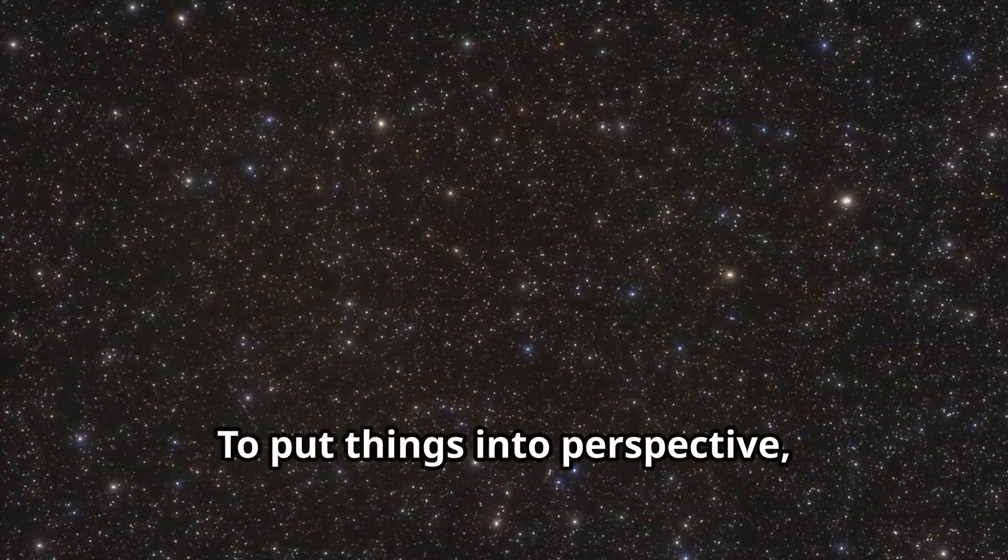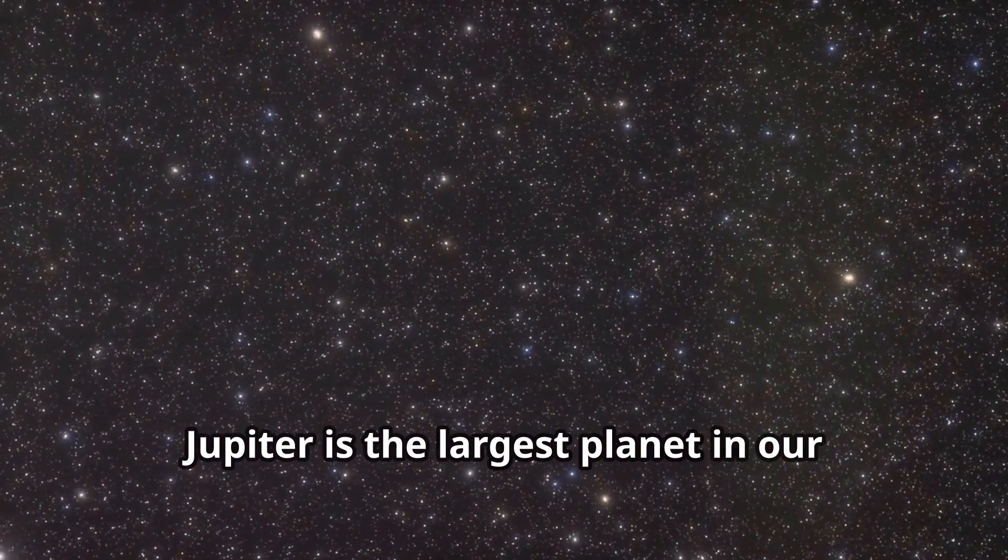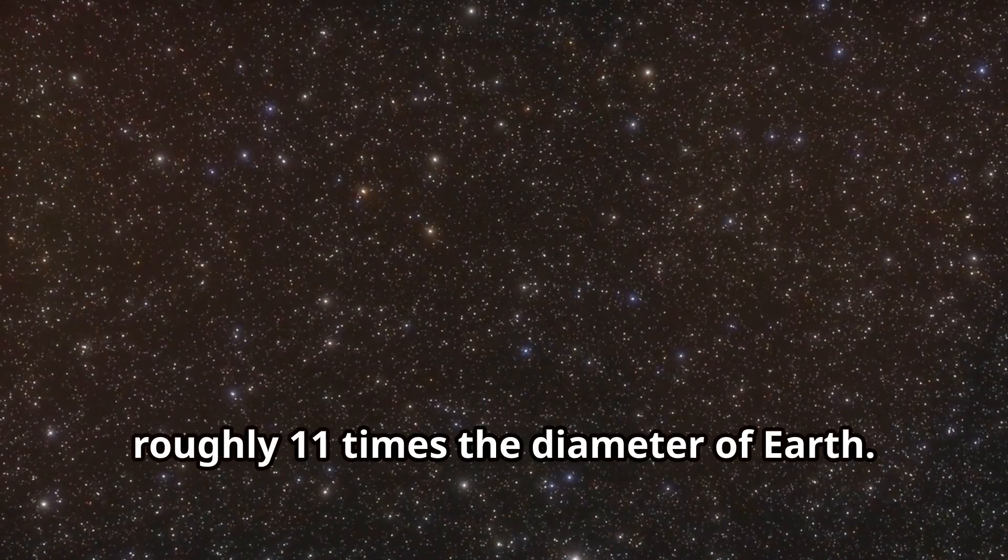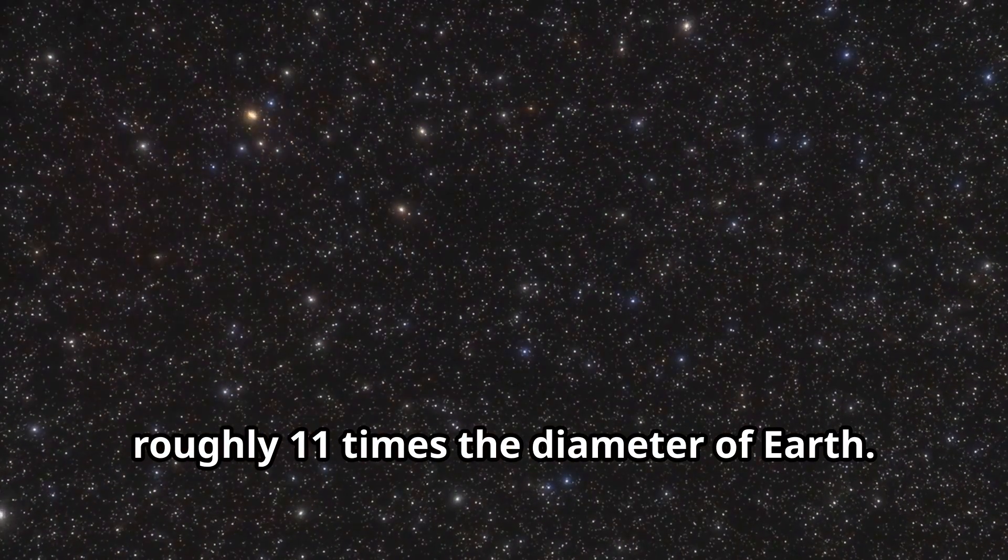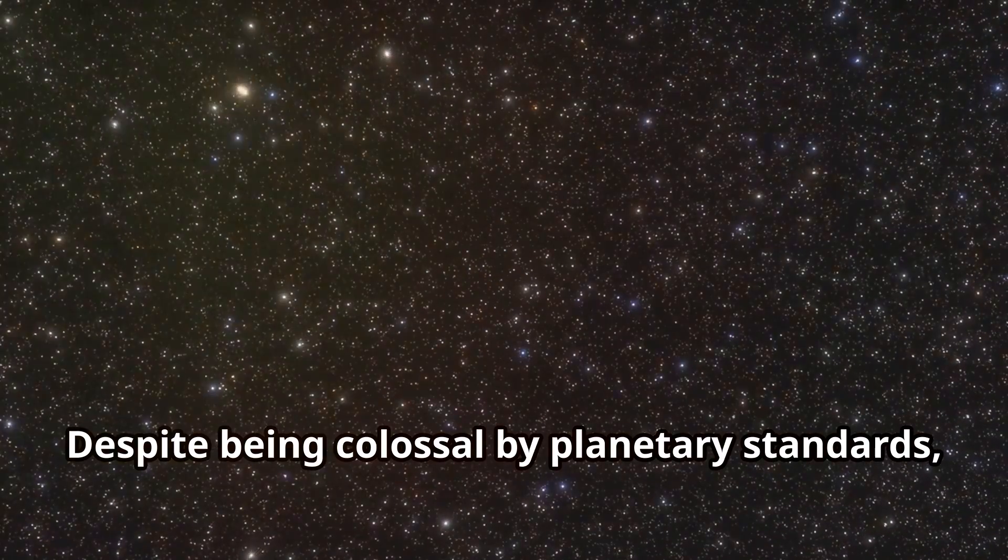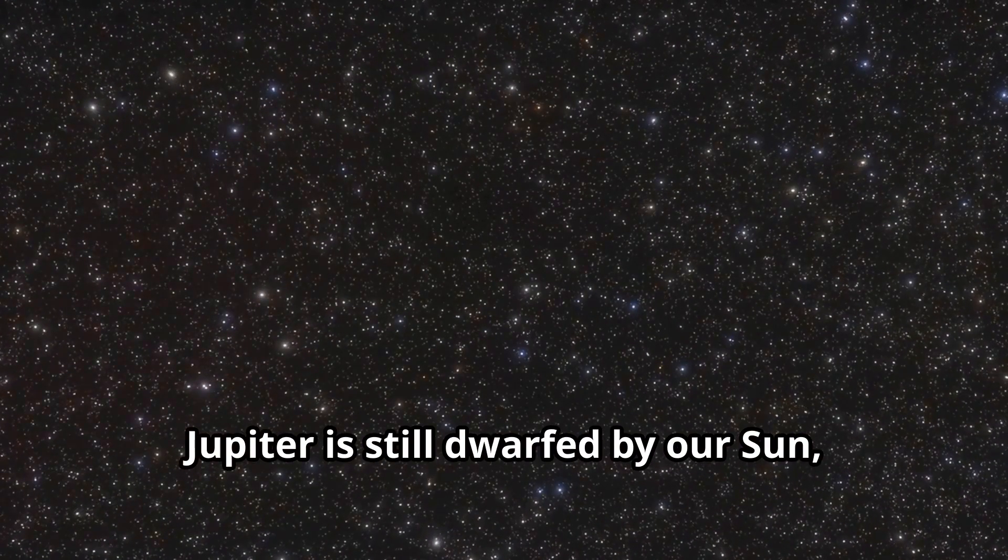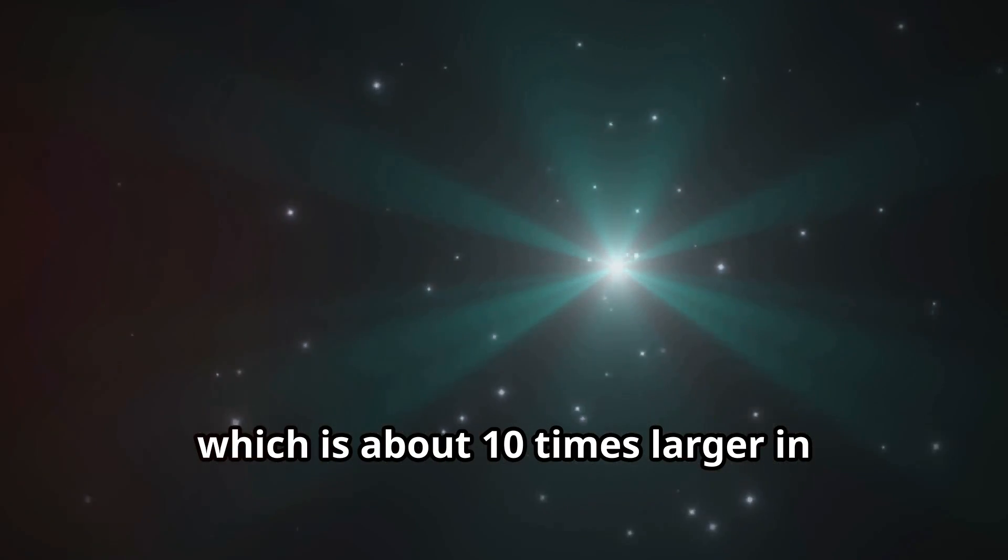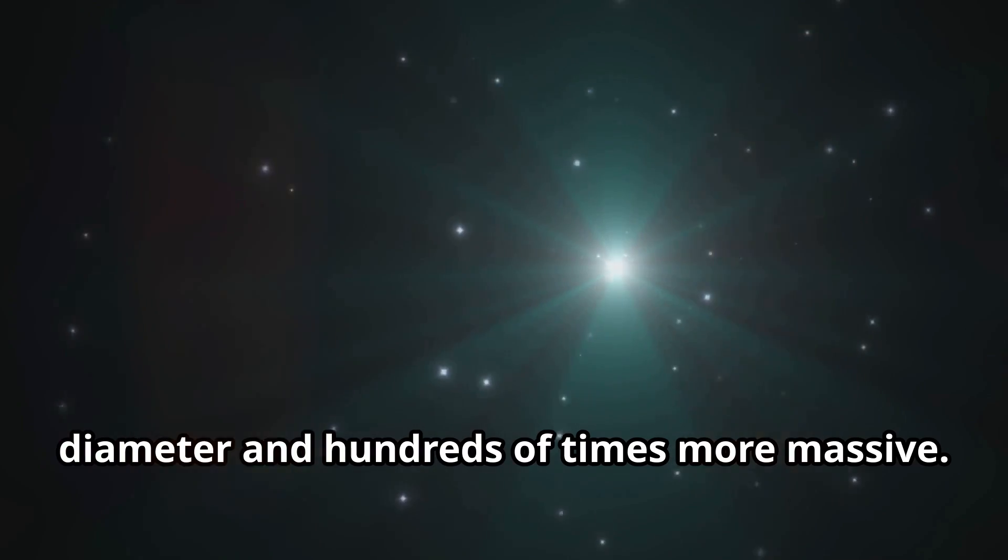To put things into perspective, Jupiter is the largest planet in our solar system, roughly 11 times the diameter of Earth. Despite being colossal by planetary standards, Jupiter is still dwarfed by our Sun, which is about 10 times larger in diameter and hundreds of times more massive.